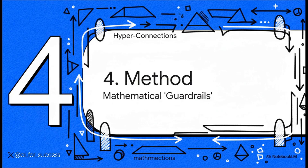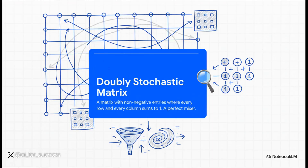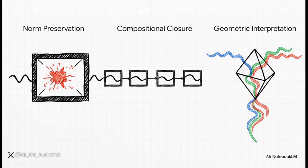So we've got an unstable and inefficient design. The solution this paper proposes is called Manifold Constrained Hyperconnections, or MHC. The best way to think about it is like adding a set of mathematical guardrails to the system, so you can get all the power of Hyperconnections with none of the risk. The secret ingredient is a special mathematical object called a doubly stochastic matrix — a matrix where every single row and every single column adds up to exactly one. It basically acts like a perfect mixer: it redistributes information without ever amplifying it or losing it. This constraint is the perfect tool for three important reasons: first, it's norm-preserving, which stops signals from exploding; second, it has compositional closure, guaranteeing that as you stack more layers the whole system stays stable; and third, it's a really robust way to fuse and mix information together.